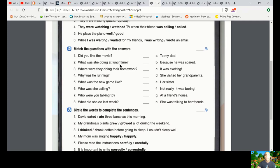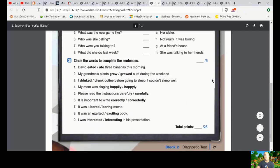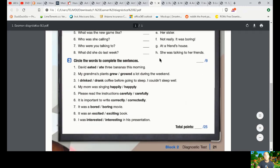What was she doing at lunchtime? She was talking to her friends. That would be the correct answer. So for number two, it would be H. For number three it says circle the words to complete the sentences. David eat it three bananas this morning or David ate three bananas this morning. The correct answer is ate three bananas this morning.